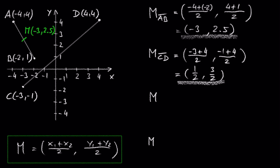So, the midpoint of point C and D is 1.5, comma 3.5.